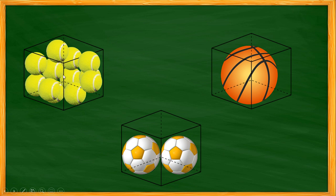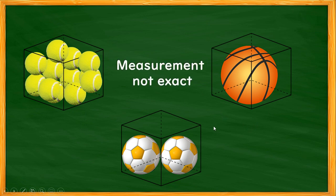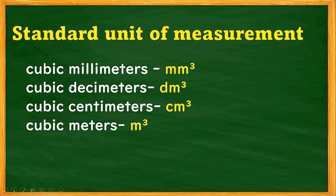The first box contains many small ping pong balls, the second box contains two medium-size soccer balls, and the third box contains one basketball. As you can see, the measurements are not exact — so these are non-standard units of measurement. In contrast, standard units of measurement use cubic millimeter, cubic decimeter, cubic centimeter, and also liter.